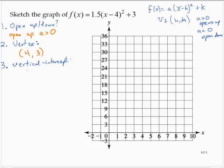Letting x take the value 0, f(0) would equal 1.5(0 - 4)² + 3. Order of operations. 1.5(-4)² + 3. Negative 4 squared is 16. 1.5(16) + 3.